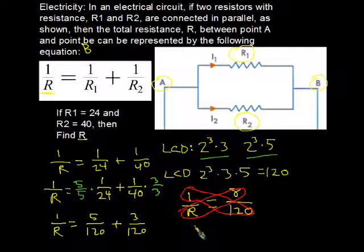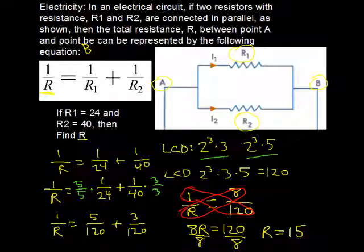That gets us 8R is equal to 120. And if I divide both sides by 8, I get R equals 15. So there you have it, a good practical application for solving rational equations and lots of little tricks along the way.